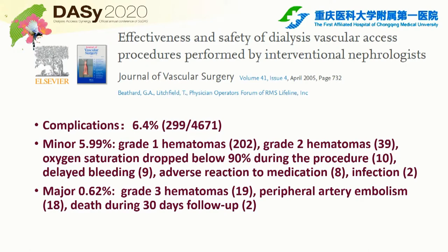A 2017 clinical trial reported 7 years' experience with 149 thrombectomies in 68 grafts. There were 7 complications: 6 minor, including 5 limited hematomas and 1 bronchospasm; and 1 major — arterial anastomosis rupture requiring surgical intervention. Another 2005 clinical trial on the effectiveness and safety of dialysis vascular access procedures showed a complication rate of 6.4% in a large cohort. Minor complications included grade 1-2 hematomas, oxygen desaturation below 19% during the procedure, delayed bleeding, adverse reactions to medication, and infection (very rare). Major complications included grade 3 hematomas, peripheral arterial embolism, and 2 deaths during 30-day follow-up.